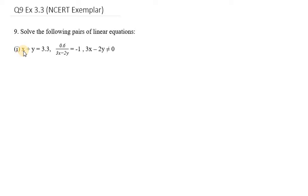Here it is given that 3x minus 2y is not equal to 0. That means the denominator of the second equation is not equal to 0, so it has some value. Now, first we write equation 1: x plus y equals 3.3. Now the second one. We need to use cross multiplication to reduce this value.